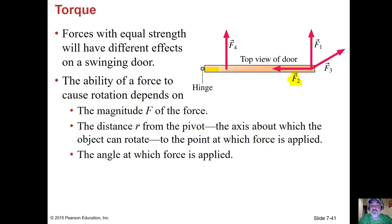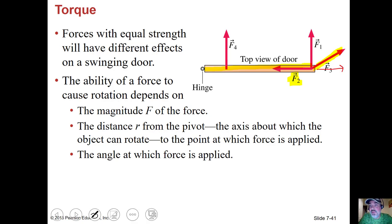The greater the lever arm — the distance to the hinge — the bigger the torque is going to be. F3 will also get the door to open, but you're not utilizing all of the perpendicular part of F3. F3 has a component in the x direction and a component in the y direction. The perpendicular part of F3, which I'll call F3-perpendicular, is smaller than F1. F1 is completely perpendicular to the lever arm, so all of F1 is perpendicular.